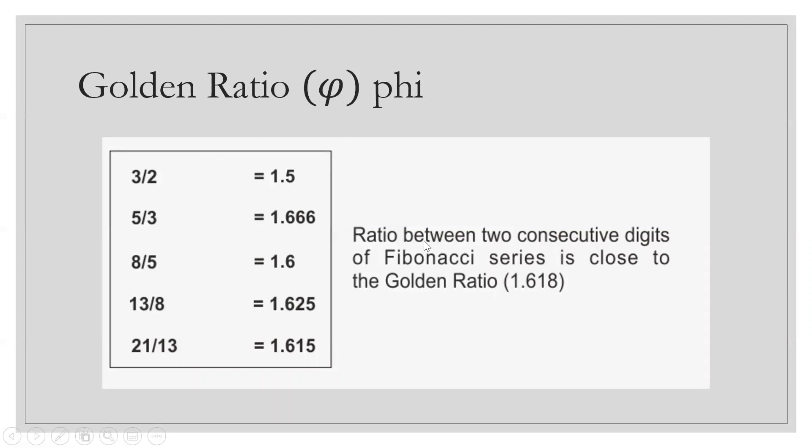Dividing. This is the ratio of two consecutive digits of Fibonacci series. Just like this: 1, 1, 2, 3. The 3 is divided by 2.